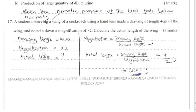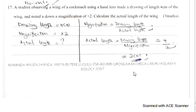Question 17: A student observing a wing of a cockroach using a hand lens made a drawing of length 4 cm with a magnification of ×2. To calculate the actual length: magnification = drawing length ÷ actual length. Therefore, actual length = drawing length ÷ magnification = 4 ÷ 2 = 2 cm.